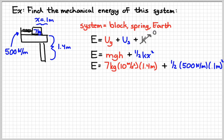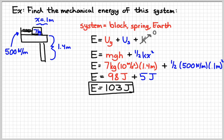So doing some arithmetic, we would get 98 joules for the gravitational potential energy, and 5 joules for the elastic potential energy. And so the mechanical energy would be something like 103 joules.